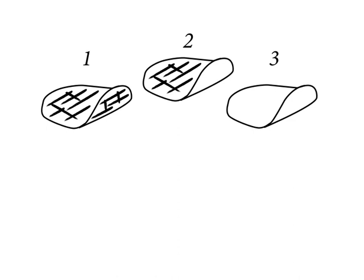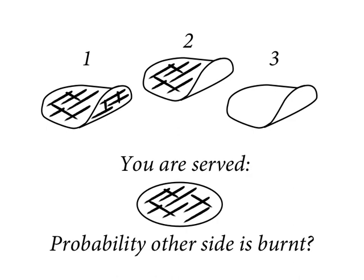Now I serve you a pancake and you don't get to see which one it was because you weren't in the kitchen. I just bring a plate out and put it down, and what you see is that the upside of this pancake is burnt. Now I ask you the question because you've been in my statistics course for ten weeks: what's the probability that the other side of this pancake is burnt? This is a version of a fairly famous logic and probability puzzle, and I give you a citation to the history in the textbook.